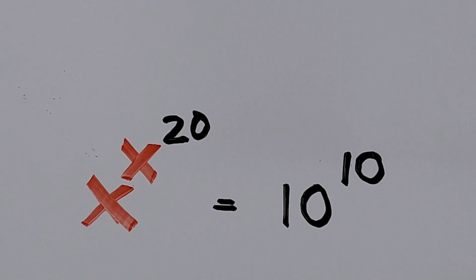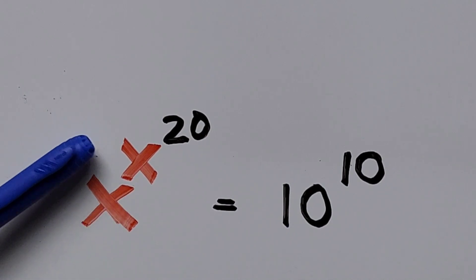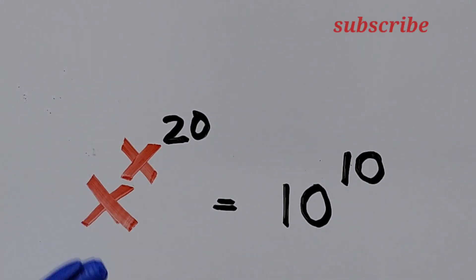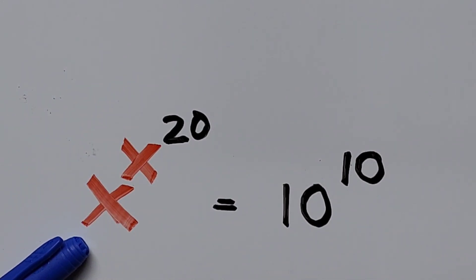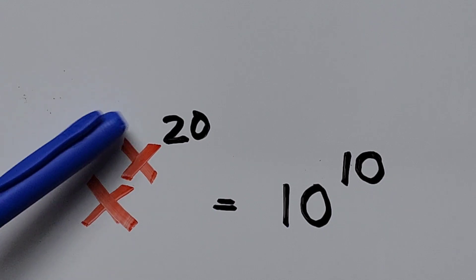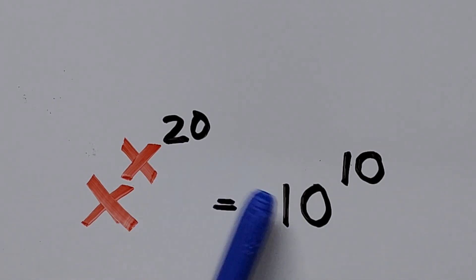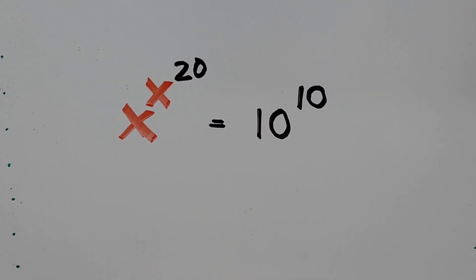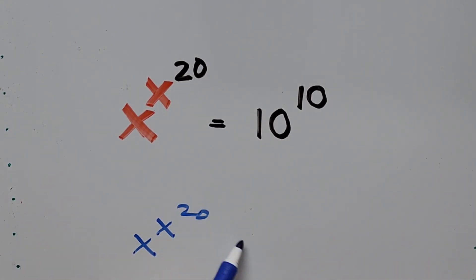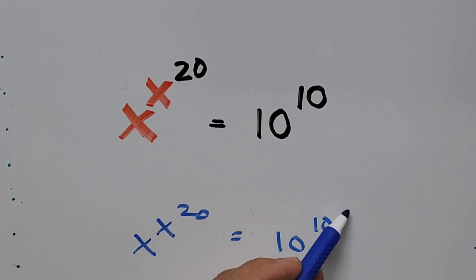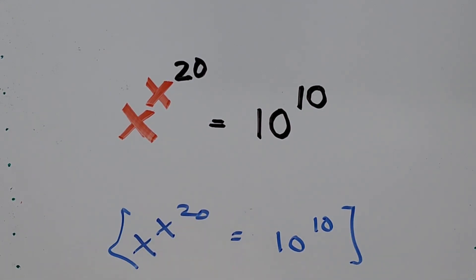Our aim in solving for x is to make the exponent look the same way as its base. The exponent is x to the power of 20, and the base is x — we should have the exponent of the base equal to 20. To achieve that goal, we have to raise the whole equation to an exponent of 20. So we have x to the power of x to the power of 20, equals 10 to the power of 10, and we're raising the whole equation to an exponent of 20.